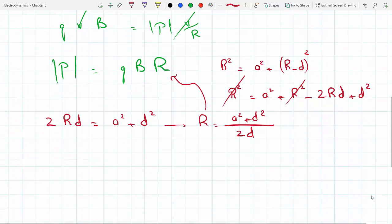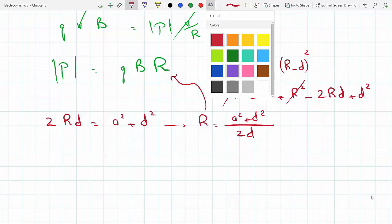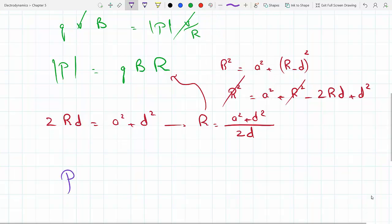So the magnitude of the momentum will equal qB times (a² + d²)/(2d).